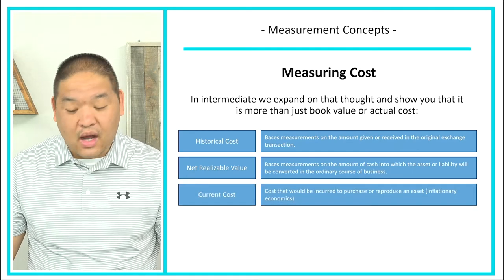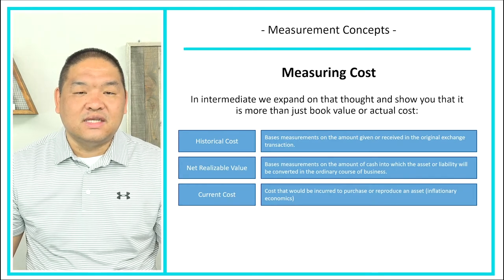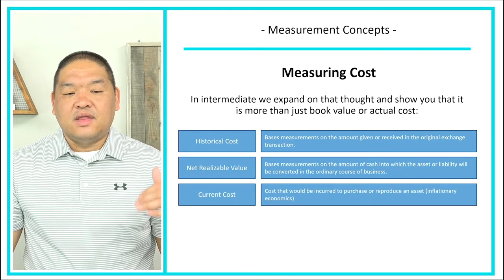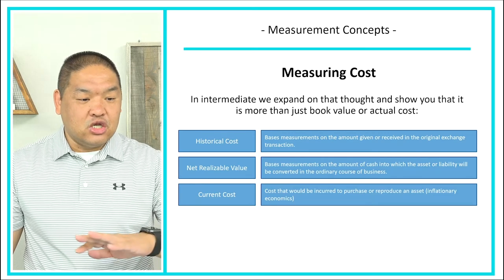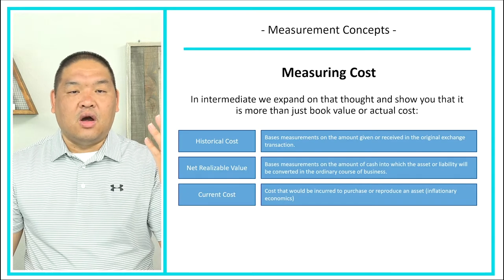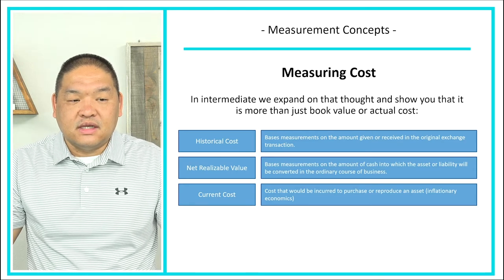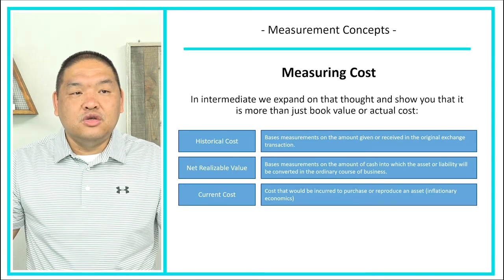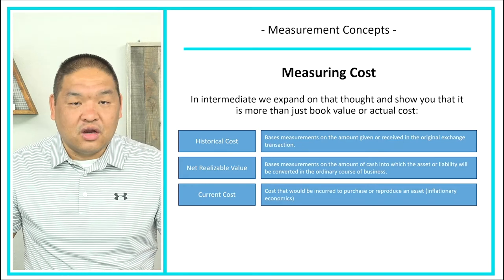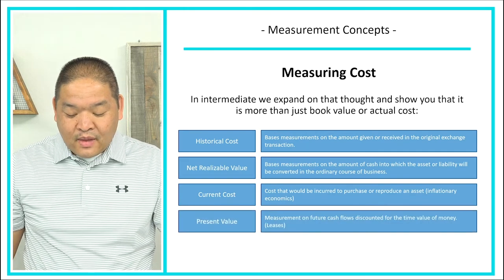We also have current costs, which is different from historical cost. This is the cost that would be incurred to purchase or reproduce an asset, and it's typically used in inflationary economies. The reason we would use current costs is because the historical cost is no longer appropriate due to inflation. For example, maybe it cost us fifty dollars to bring a product in-house, but now it's costing ninety dollars. What's more useful to a decision maker is the ninety dollars, so we might book something at the current cost — very rare, but it could apply.